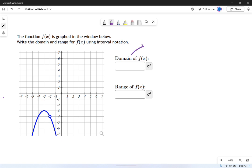What domain means is what x values exist as part of the function. Range is what y values exist.